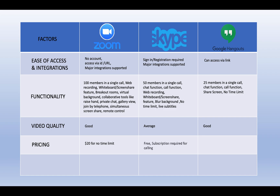As far as Skype is concerned, it is free, but a subscription is required if you want to call other participants, and the call cost varies by country. For Google Hangouts, the basic software is free, but if you want to add more users, you can pay $7.80 per month and have up to 100 users, also gaining access to other G Suite apps.